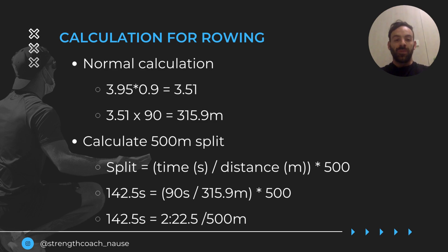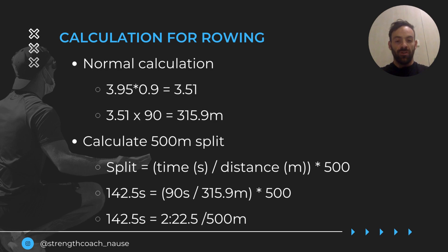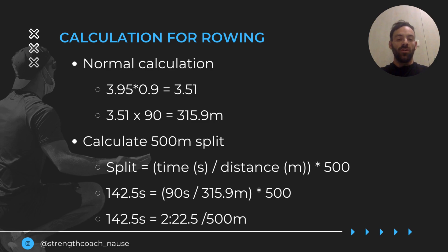To find the split, we back-work the calculation. Knowing I want to travel 315 meters in 90 seconds, I divide the time by the distance and multiply by 500 — that tells me how long it takes to travel one meter, multiplied by 500 meters, giving my 500m split. So: 90 seconds divided by 315 meters, times 500, gives 142.5 seconds — which works out to a 2:22 per 500m split. Because this is a lot of math, we've built a calculator sheet, with a link in the description below.